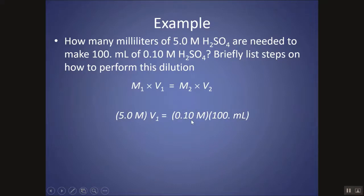So I'm just plugging into this equation and I'm solving for the V1. Okay, this is the solution I want to make. 100 milliliters of 0.1 molar, 5 molar is what I'm starting with. What volume do I need to take of this first molarity? 2 milliliters. Okay, well, how am I going to do this in the lab?